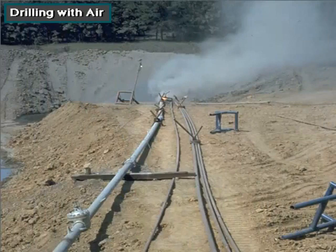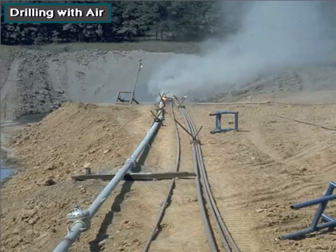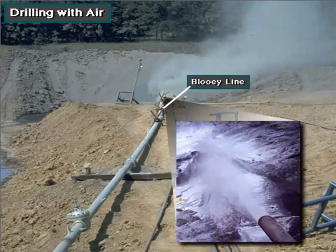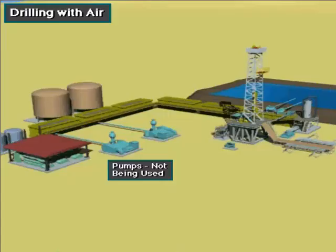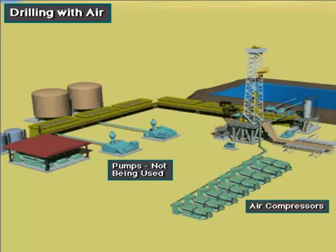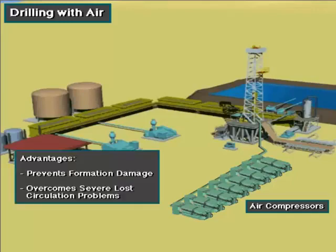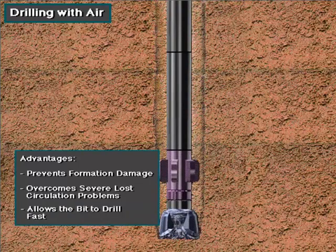Sometimes drilling fluid is dry air or natural gas. Here, dry air is coming out of the rig's bluey line, carrying very fine drilled cuttings. Air drilling uses large air compressors instead of mud pumps. Drilling with air or gas can prevent formation damage, can overcome severe lost circulation problems, and it allows the bit to drill very fast.